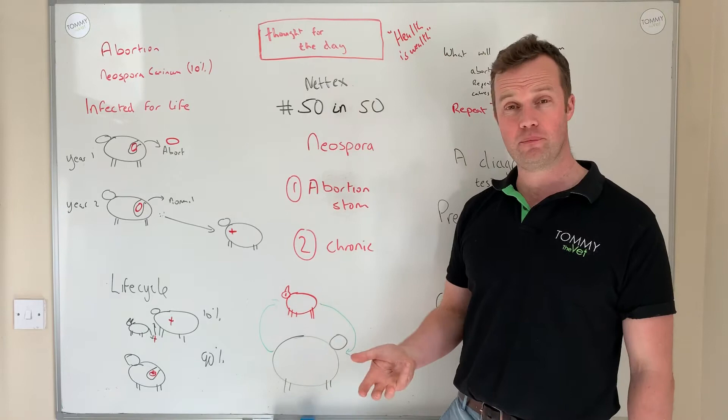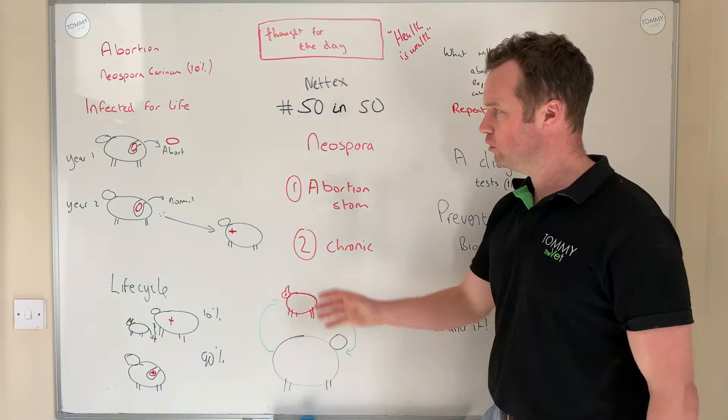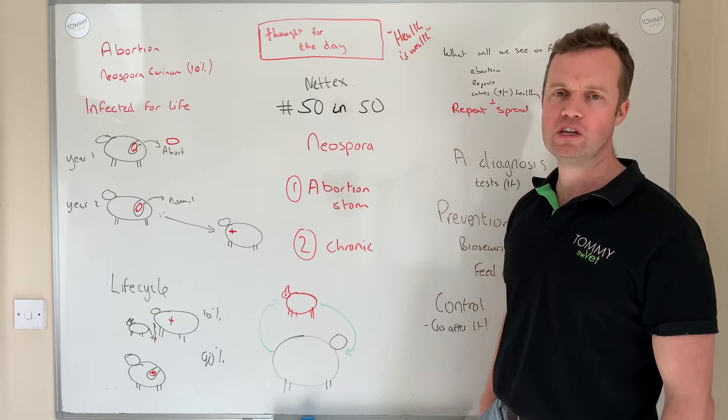But more importantly, 90% of spread occurs through generations on farm, where the dam passes the Neospora to her fetus — either causing abortion or producing abnormal fetuses that, when they become replacements, continue the cycle. So it's a complicated disease from that perspective.